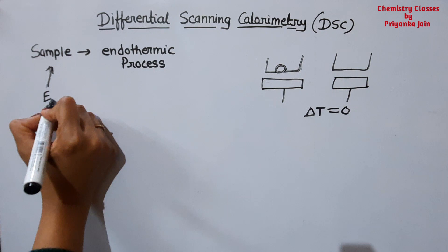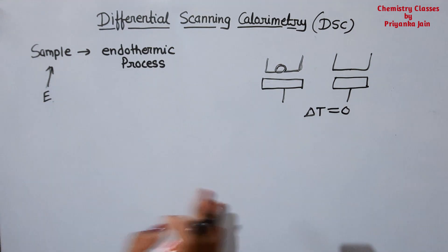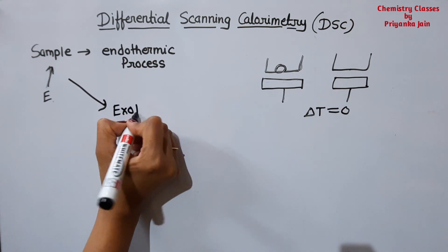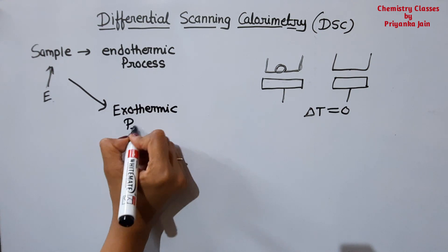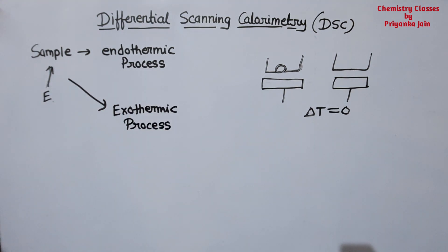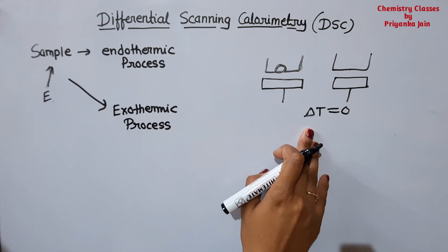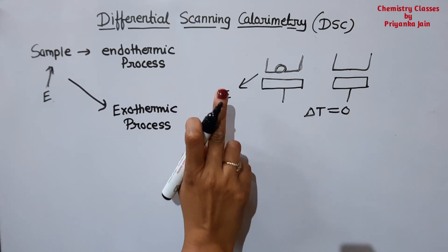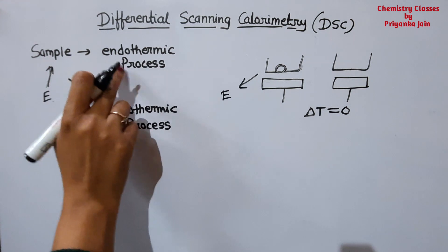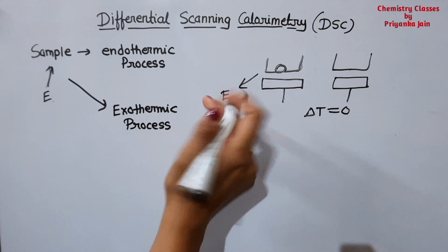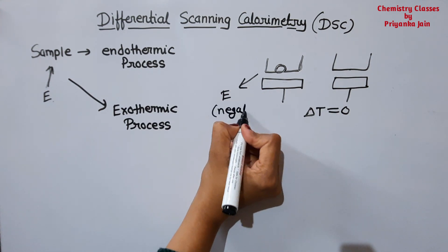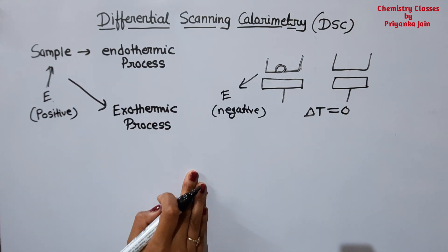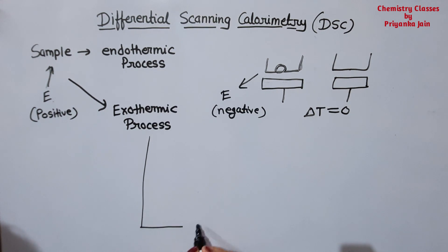So in DSC we plot energy against temperature. When the sample undergoes endothermic process we supply energy — that gives a positive peak. When the sample undergoes an exothermic process, heat evolves and temperature increases, so to maintain ΔT = 0 we have to remove this heat. The energy change is negative for exothermic and positive for endothermic.